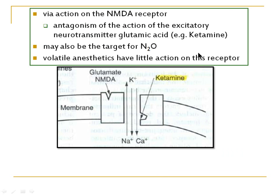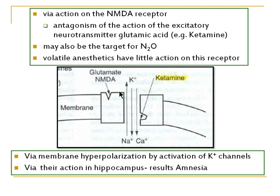A recent theory also claims that certain general anaesthetics act through the NMDA receptor, which is an excitatory receptor utilizing the neurotransmitter glutamate. Ketamine, for example, binds to the intracellular site of the receptor and acts as an antagonist of the excitatory neurotransmitter glutamate, making the cell inexcitable. The NMDA receptor is also considered a target for nitrous oxide, though volatile anaesthetics have little action on this receptor.